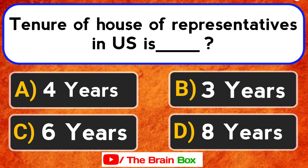Tenure of House of Representatives in the U.S. is? Your options are: Option A, Four years. Option B, Three years. Option C, Six years. Option D, Eight years.